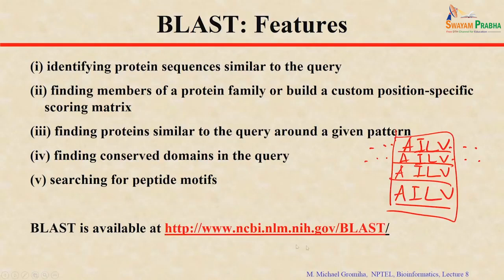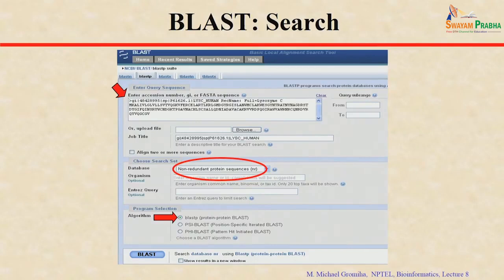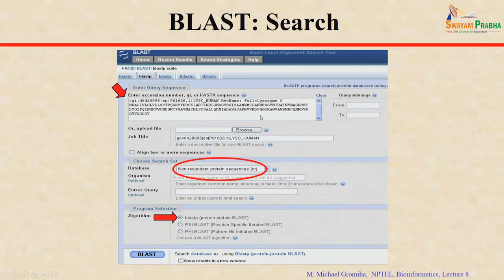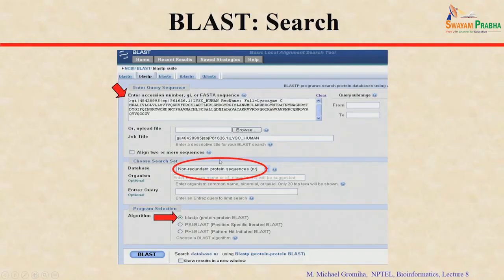This is the BLAST website at NCBI. You can use this website to identify sequences related to your query. When you open the website, it asks for your query sequence, which you can provide as an accession number, GenBank number, FASTA sequence, UniProt number, or PDB identifier. Then it asks which database you want to search — several databases are available including UniProt and the Protein Data Bank — and you must specify which one to search.